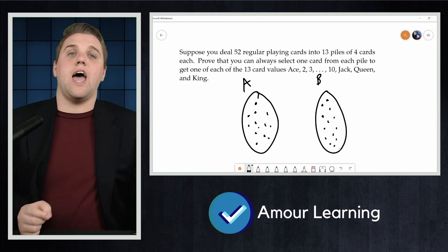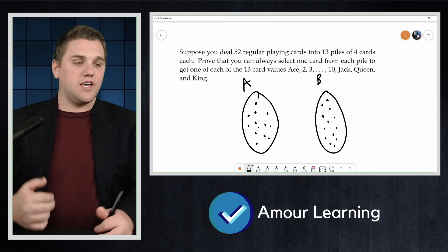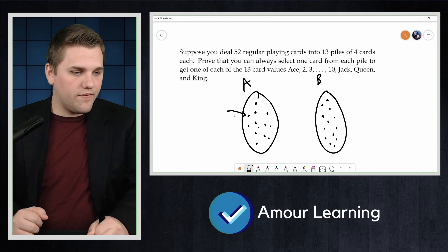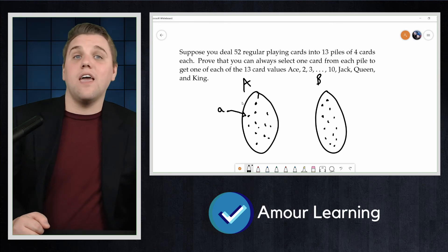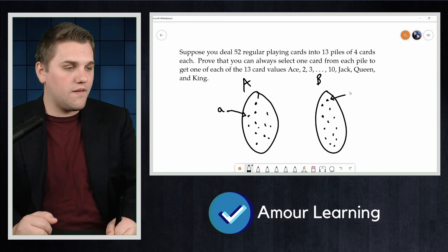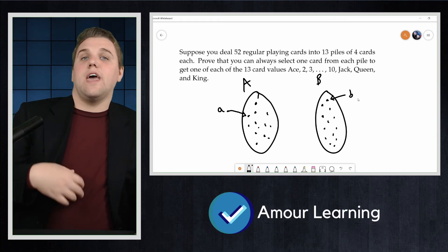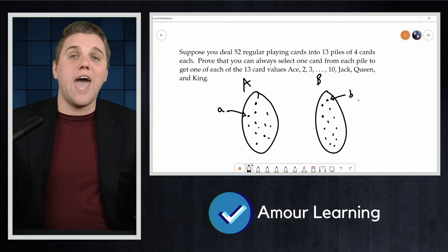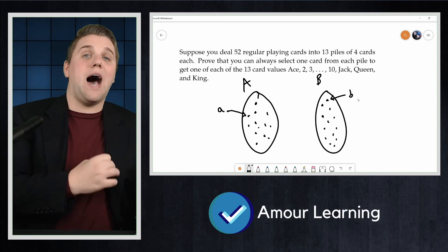Now we're going to draw an edge between vertex A in A to vertex B in B if a card with value A is in the pile B.